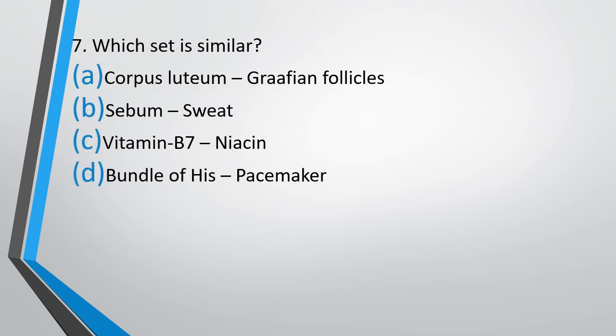Question No. 7. Which set is similar? Corpus luteum and Graafian follicle; sebum and sweat; vitamin B7 and niacin; or bundle of His and pacemaker. The correct answer is option A, corpus luteum and Graafian follicle.